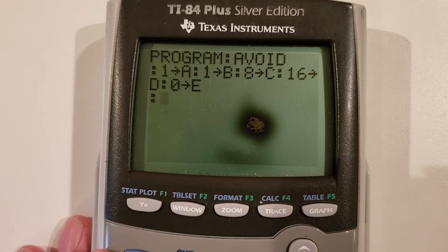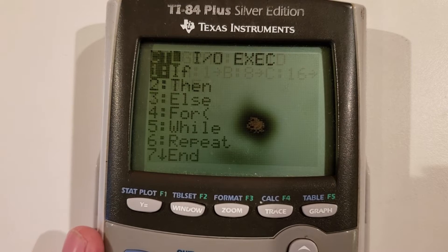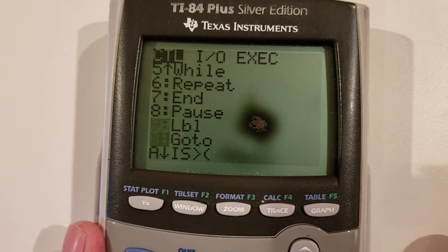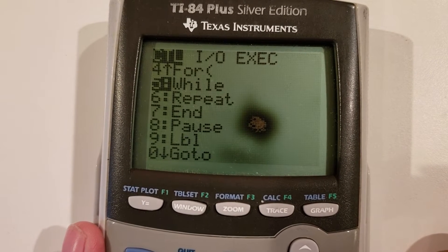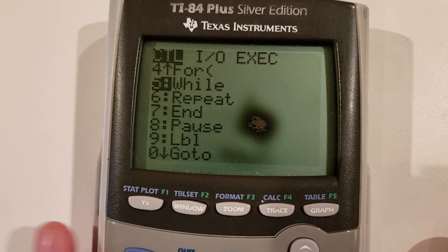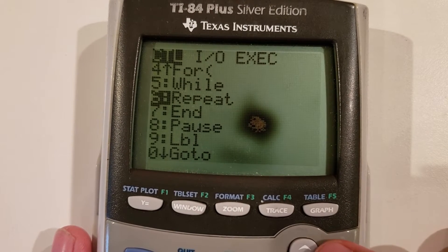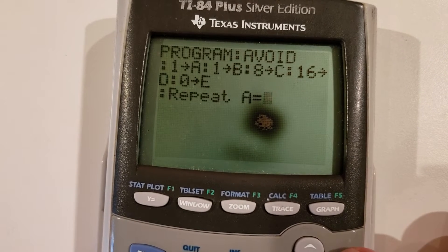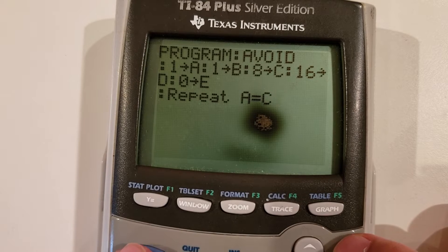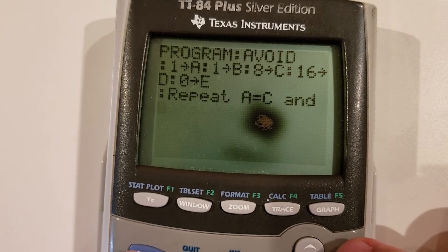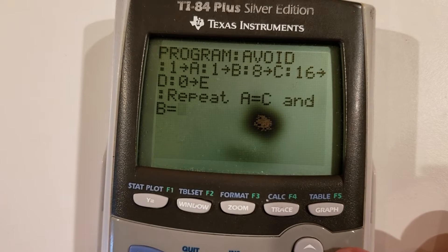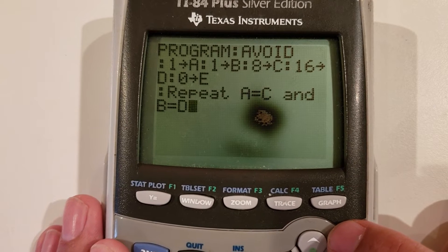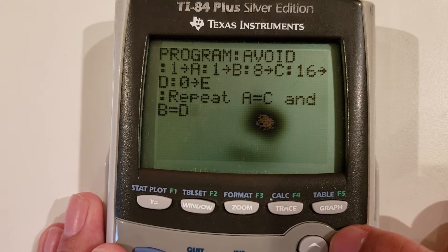There are a couple ways to create loops. We can use repeat, we can use labels and go-tos, we can use whiles. Not all methods are equal. For efficiency and clarity's sake, I will use a repeat loop. Repeat basically means that the code here will repeat until the conditions are met. Whatever is in this loop will run until A equals C and B equals D.